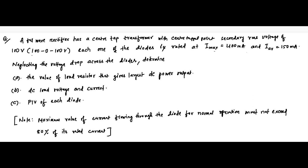Here is another question on full wave rectifier. A full wave rectifier has a center tap transformer. The secondary RMS voltage from the center tapped point is 100 volts. Each diode is rated at a maximum diode current of 400 milliampere and the DC average value of the diode current is 150 milliampere. The voltage drop across the diodes is neglected, meaning the diodes have zero forward resistance.